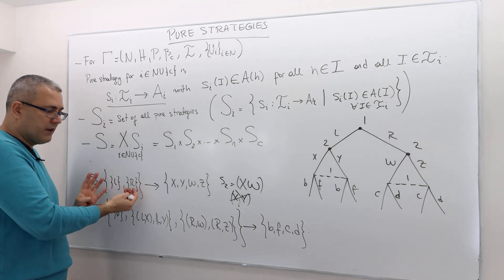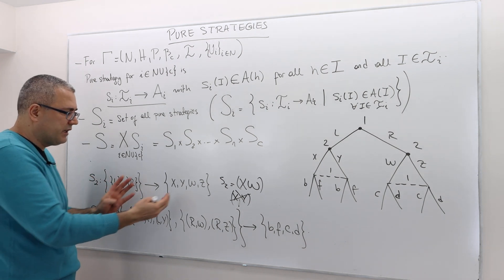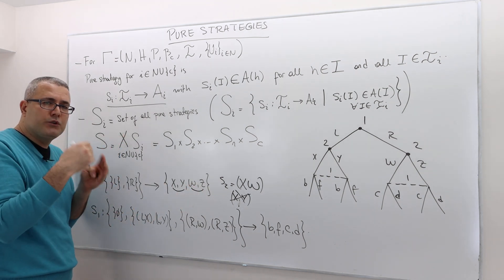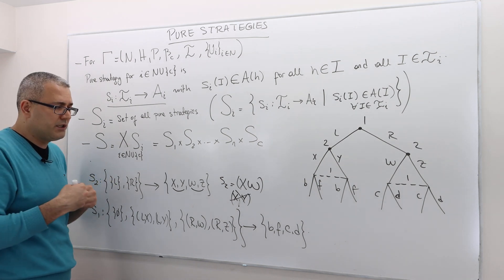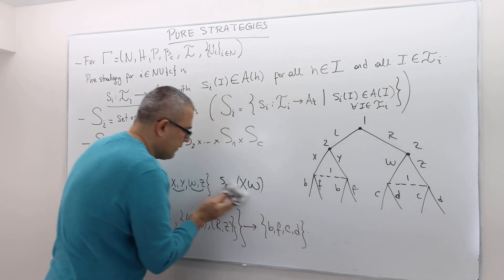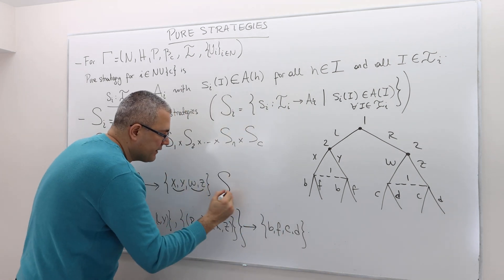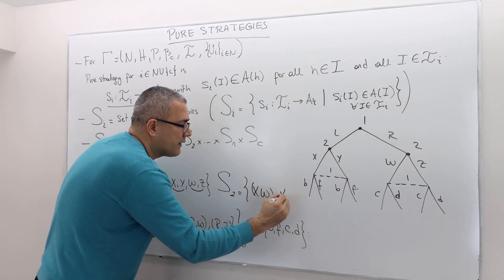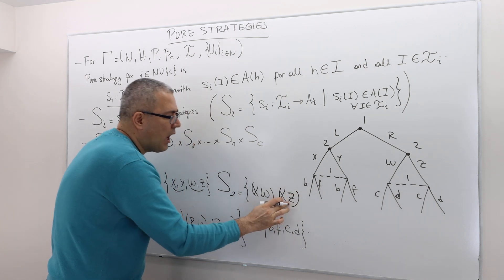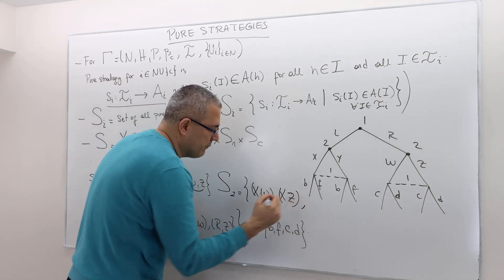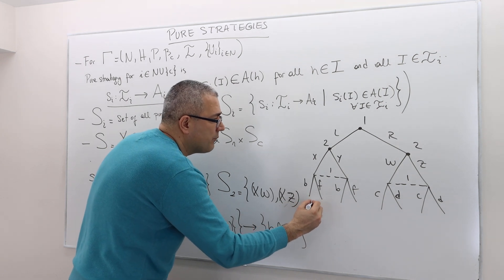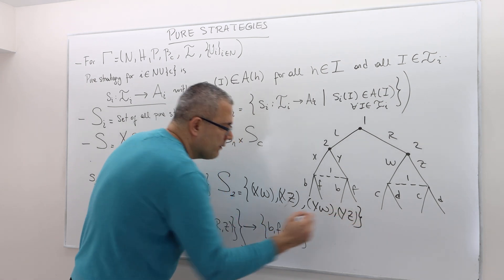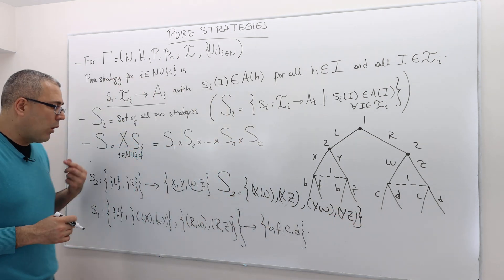For that reason, because I have two information sets here, and for each info set there's only actually two available actions, there's two to the power two, which is four available strategies, pure strategies for player two. So if you want, you can write them as set of strategies for player two, are like X, W, one of them, X, Z, and what else? Y, W, and then Y, Z. So these are all available strategies. And that's it.